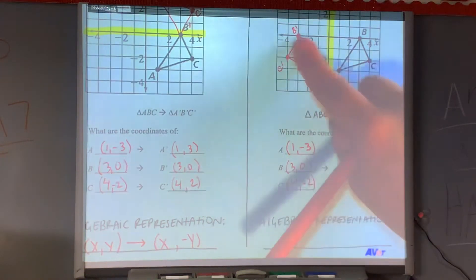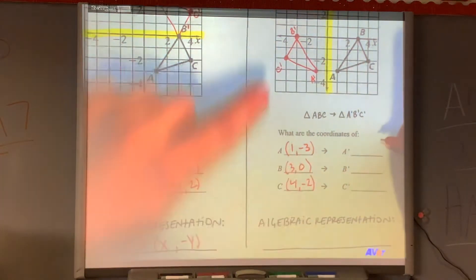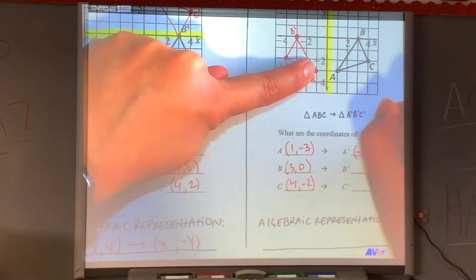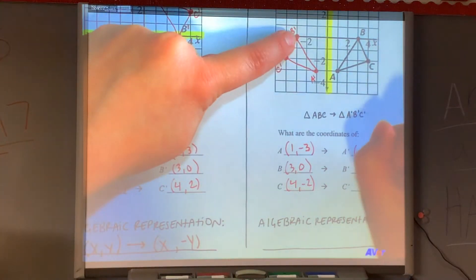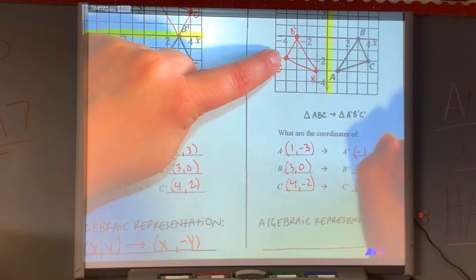Because it was the exact same coordinates. Okay. So I got the same. I got the coordinates for ABC. Now let's figure out how our new triangle is different. So A prime is (-1, -3). B prime is (-3, 0). And C prime is (-4, -2).